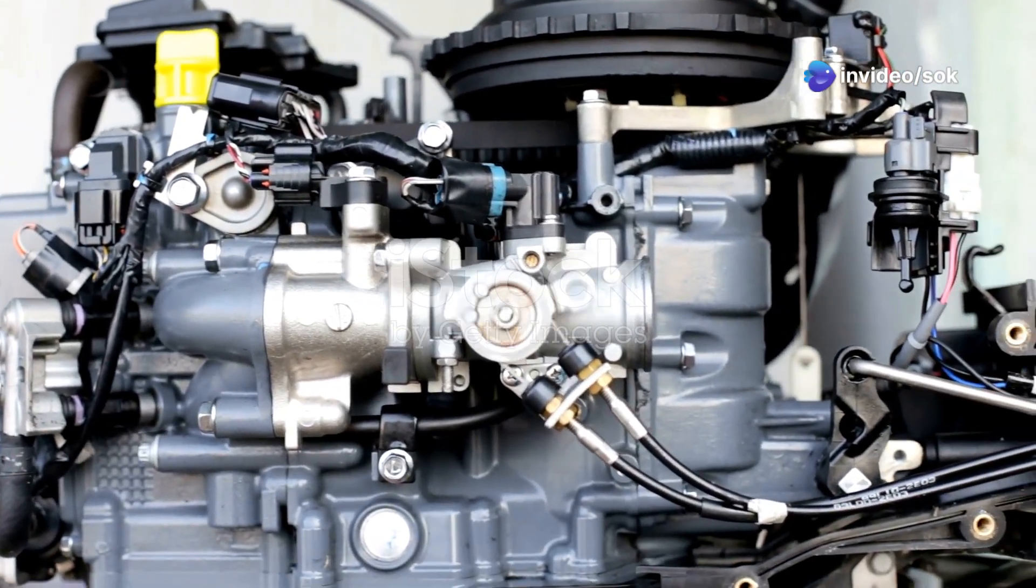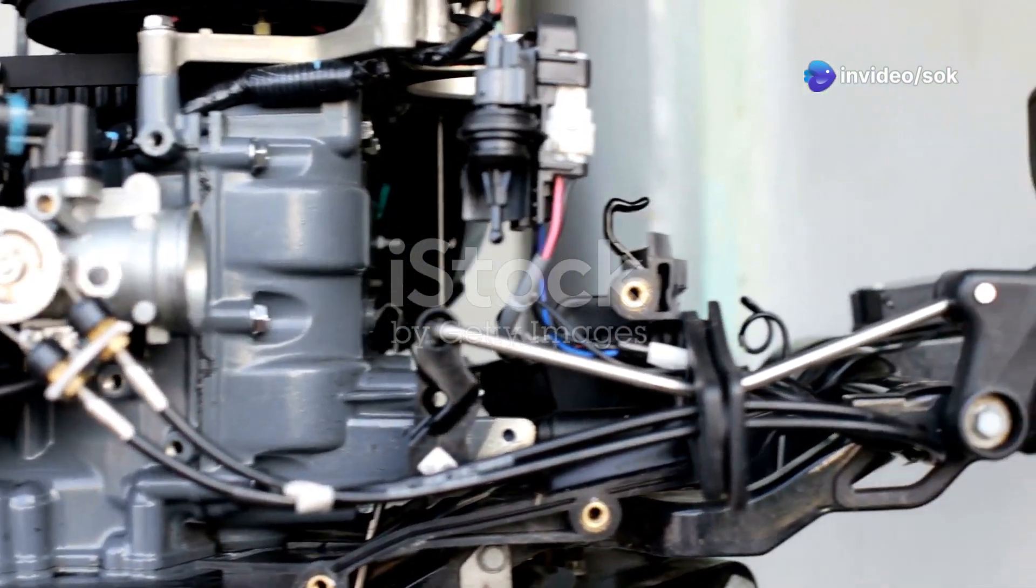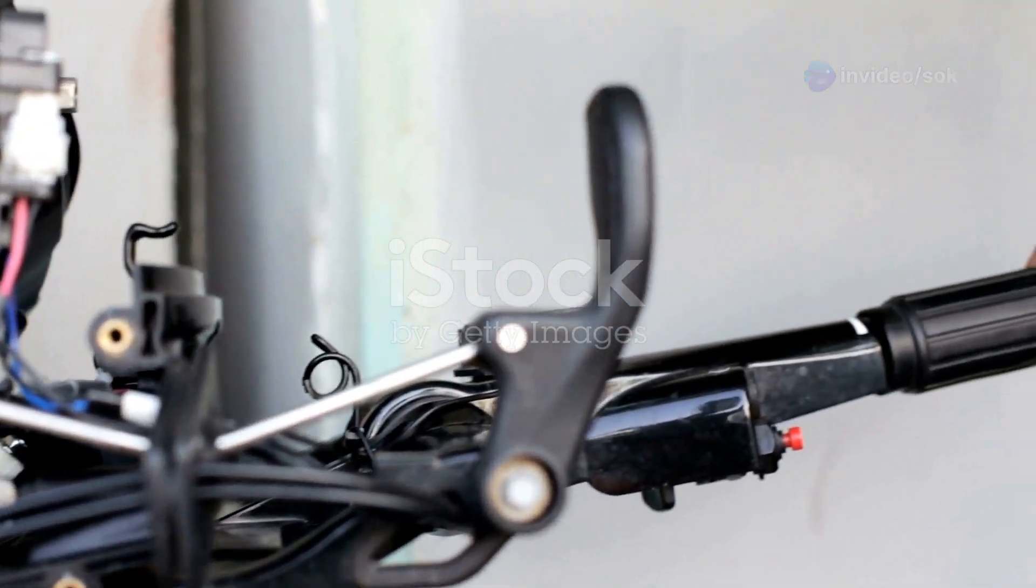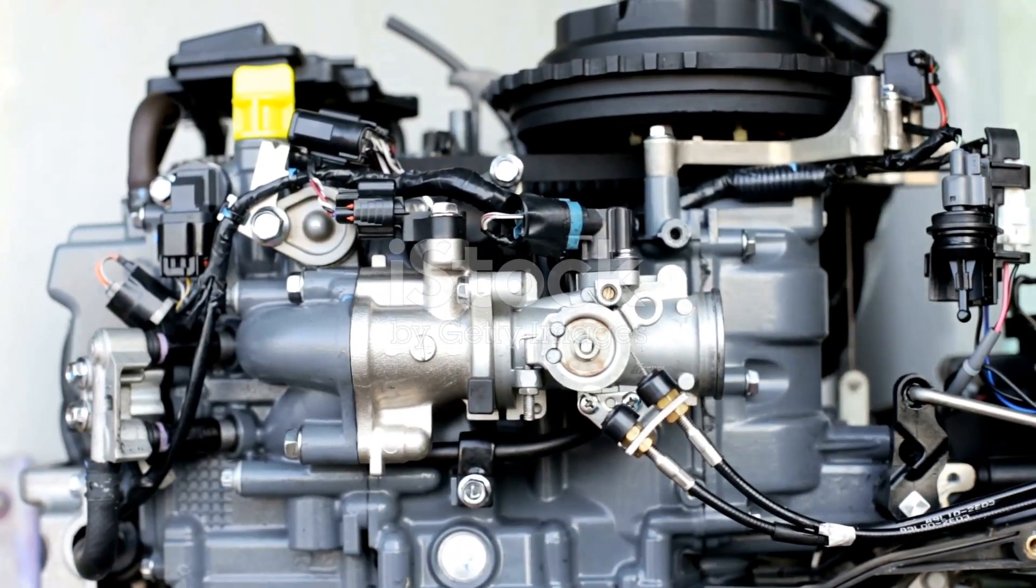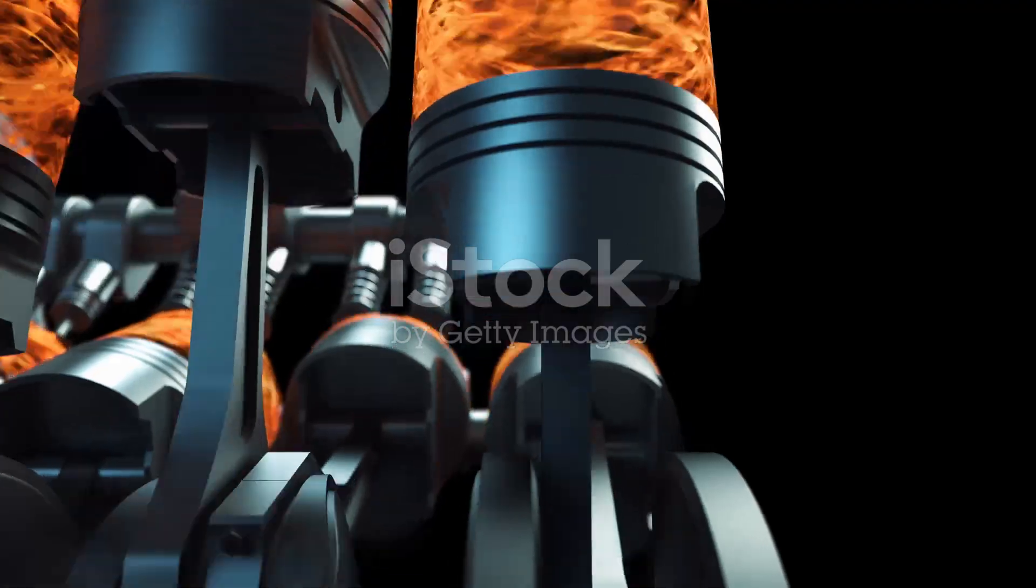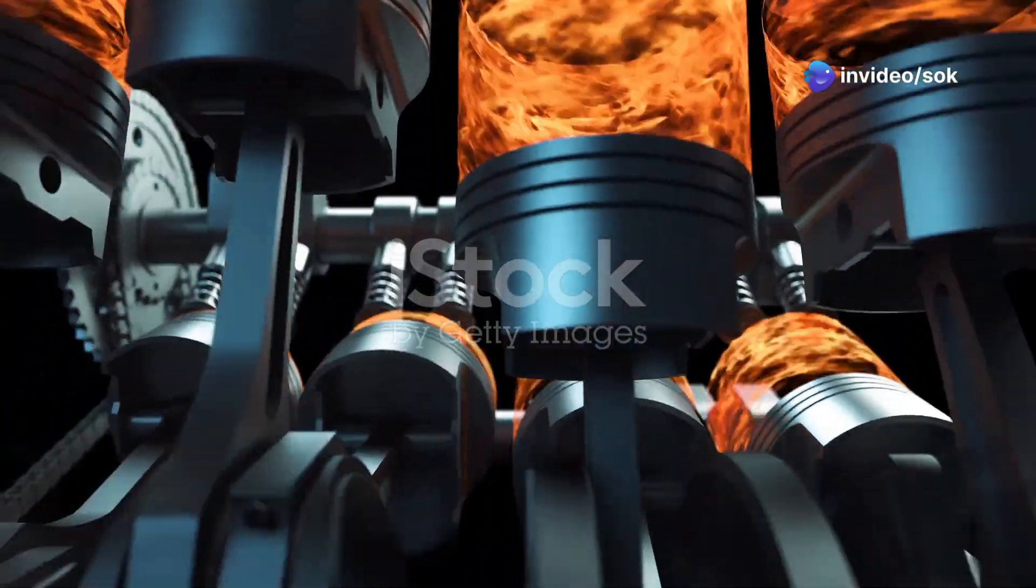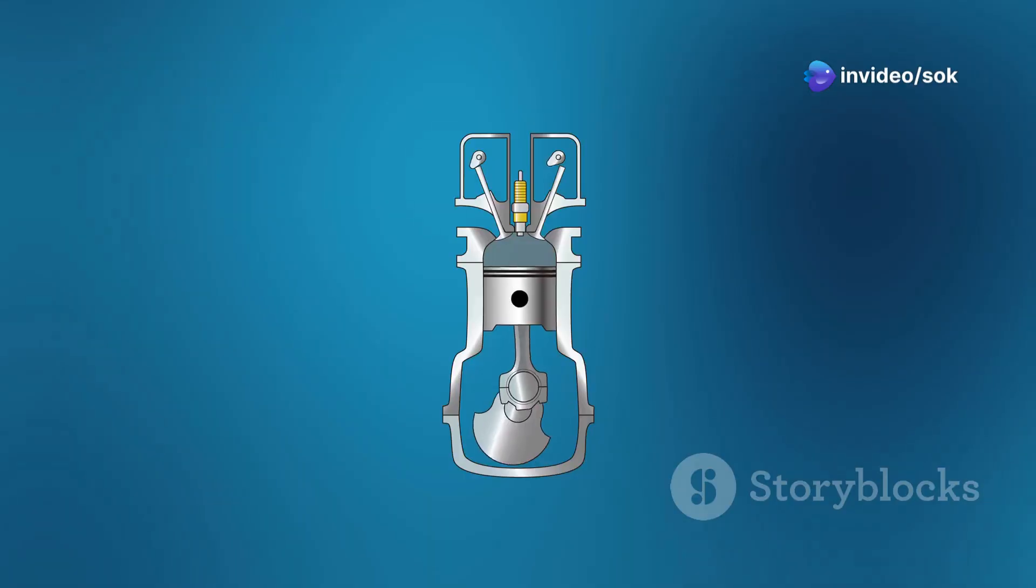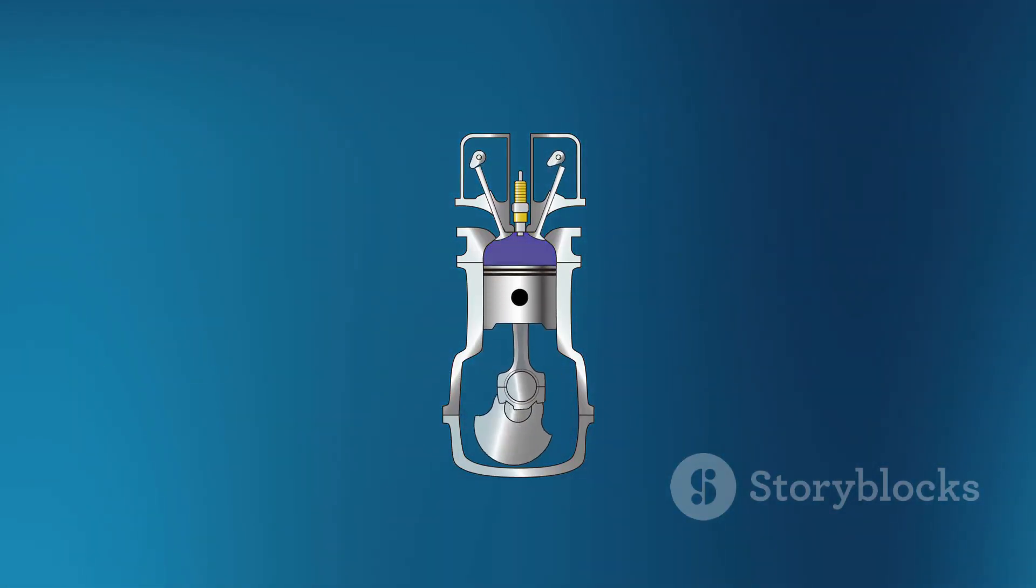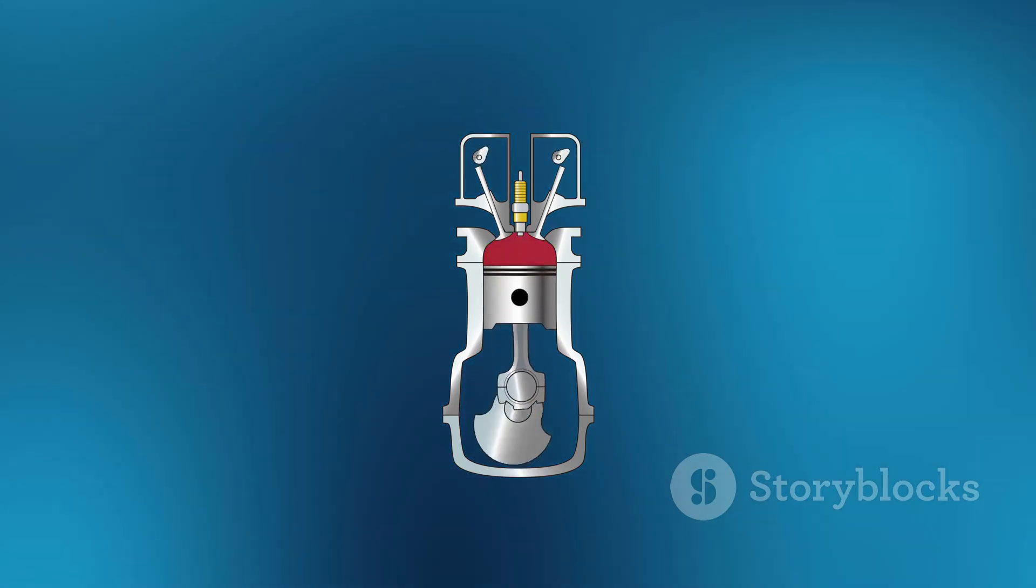The heart of the engine: the four-stroke cycle. This cycle is the fundamental process that powers most of the vehicles we see on the road today. Imagine a car engine as a powerful rhythmic machine working tirelessly to convert fuel into motion. It works in a continuous cycle of four distinct strokes: intake, compression, power, and exhaust.